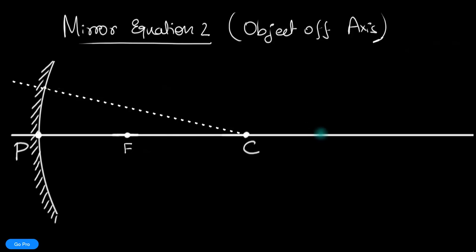As a reminder, we have already seen what happens when the object is on the principal axis. Imagine here is our object, and the object distance is u. Then we have seen that our image would be also on the principal axis somewhere over here, and the image position is i, and the image distance is v.